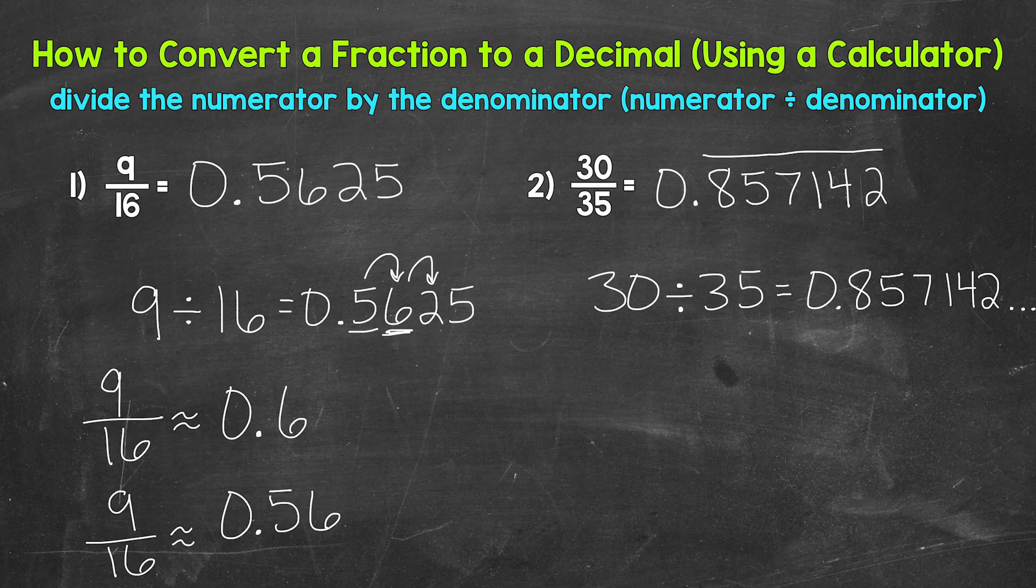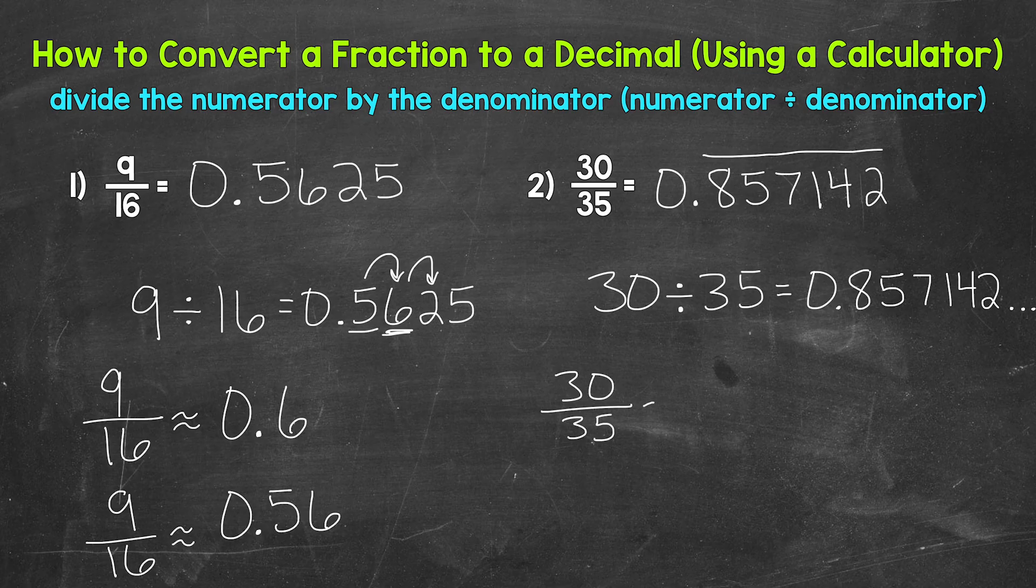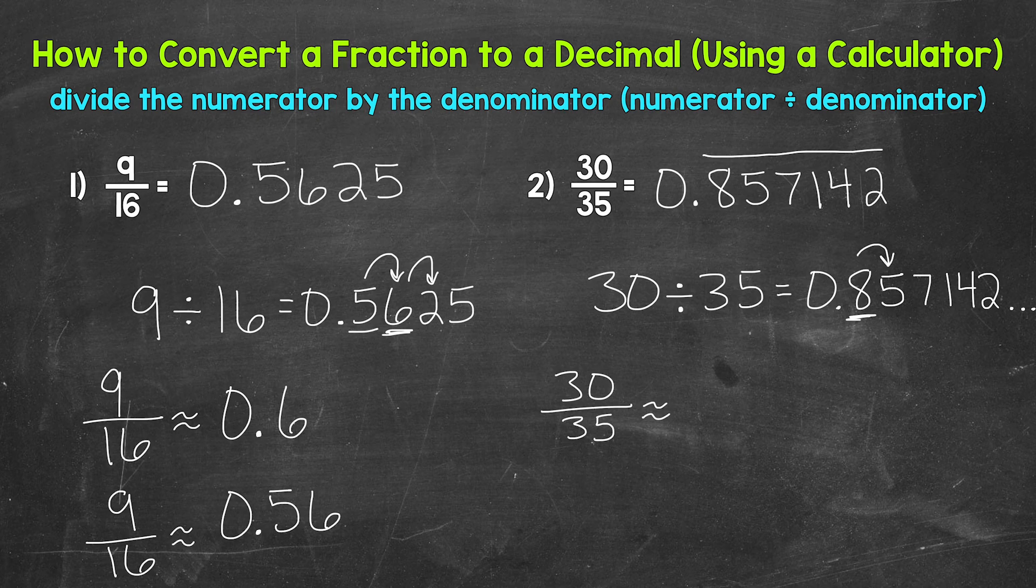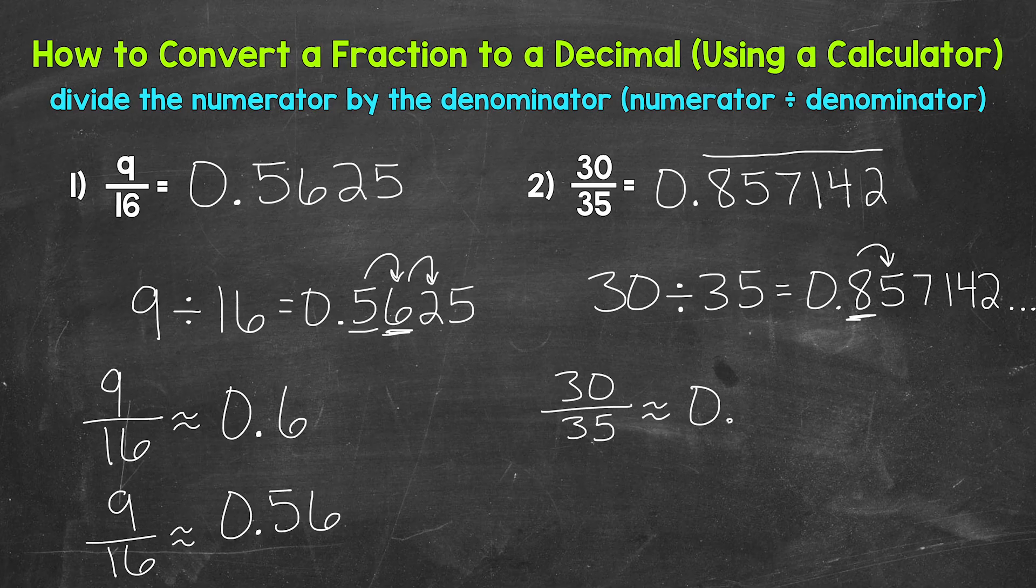our other option is to round, so let's do that. And we can round to whatever place we would like, but let's do the tenths and hundredths place again, starting with the tenths place. So we have 30 thirty-fifths is approximately, well, we have an eight in the tenths with a five to the right in the hundredths. So this rounds up to nine tenths.